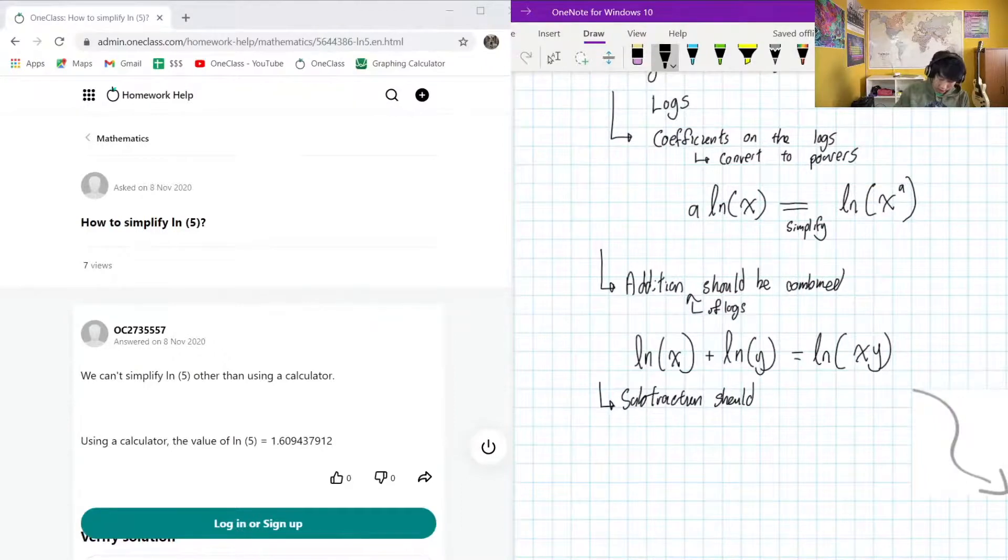Subtraction should be combined as well. So if we had a situation like ln(x) minus ln(y), instead of multiplying them together in their compressed version, you're going to divide them so it's going to be x divided by y.